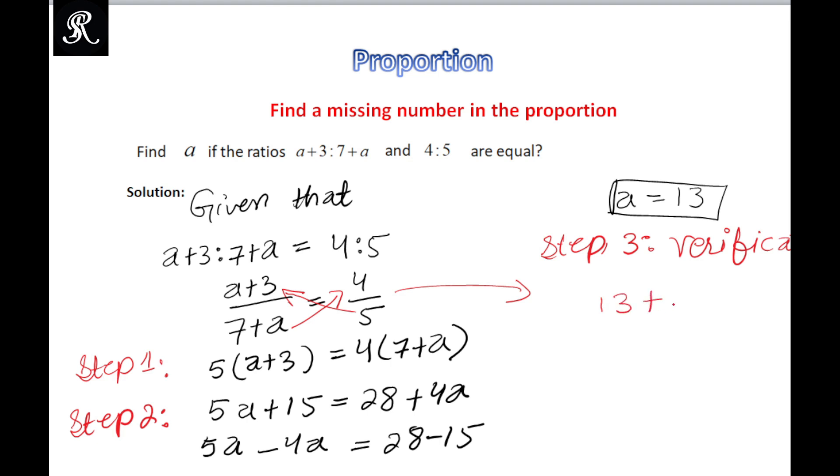...plus 3 upon 7 plus a, so that would be 7+13, is equal to 4 upon 5. Now we will simplify it. We will get from here 13+3 is 16.